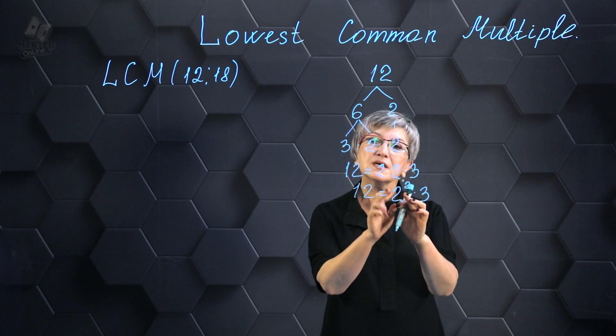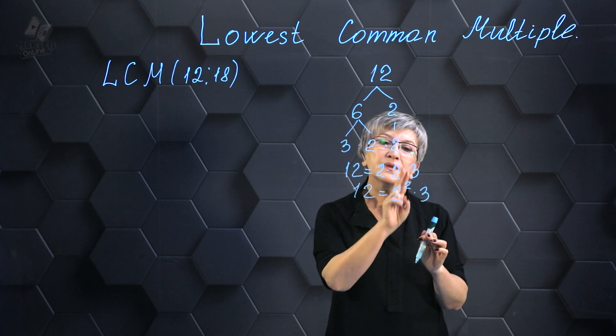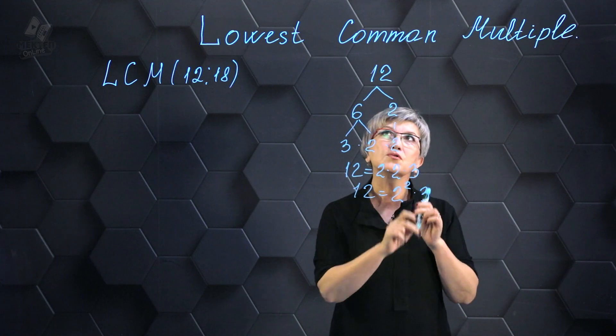Why did I write 2 to the power of 2? Because there are two 2s here, so I wrote 2 to the power of 2, which means two 2s.